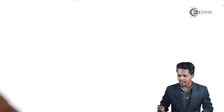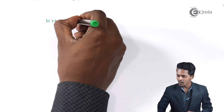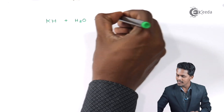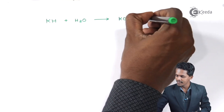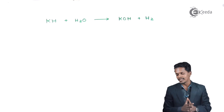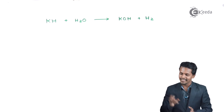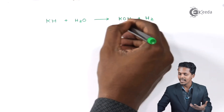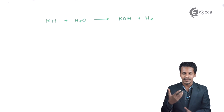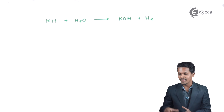Ionic hydrides are soluble in water, but this solubility involves a very vigorous reaction. For example, potassium hydride (KH) undergoes hydrolysis to produce KOH and hydrogen gas, releasing a tremendous amount of energy. Similarly, sodium hydride reacts with water to produce NaOH along with the evolution of hydrogen gas. So ionic hydrides react with water to produce a base.